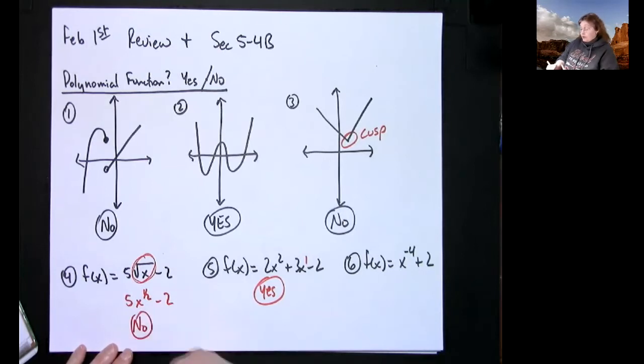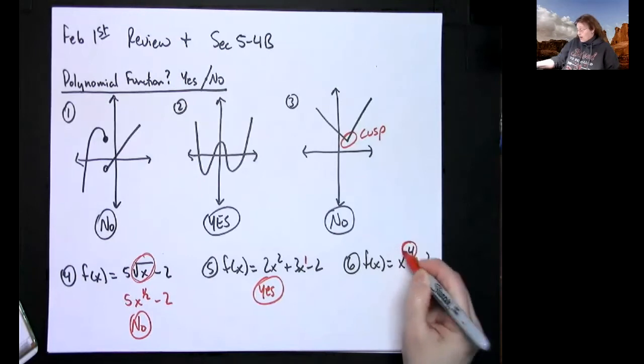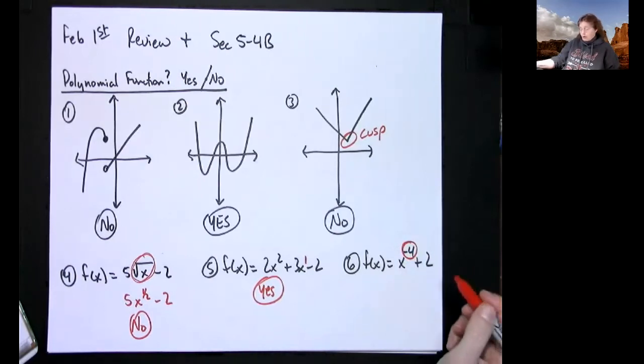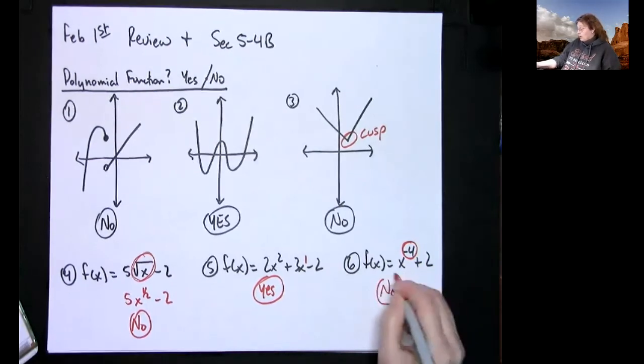And then again looking over here I have a negative four as the exponent. That's not a whole number, it's not a positive integer. It's an integer, it's just not positive, so it's not a whole number, so then this is a no as well.